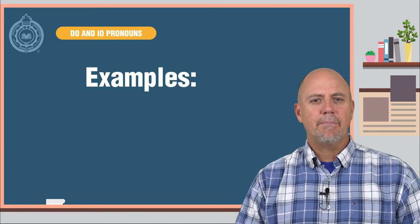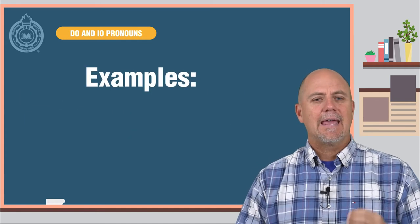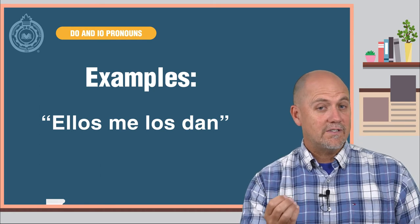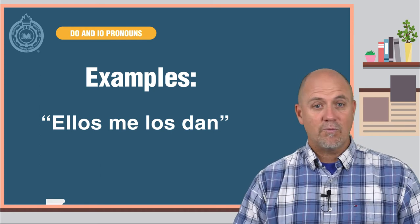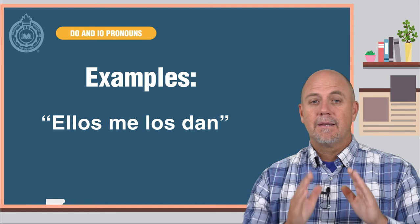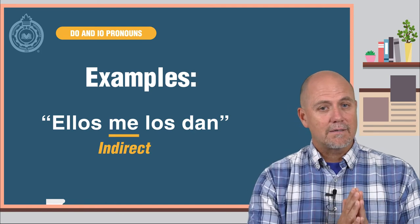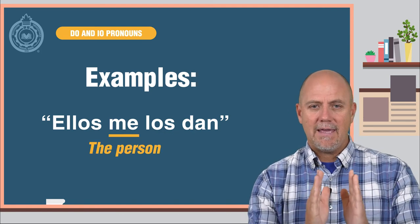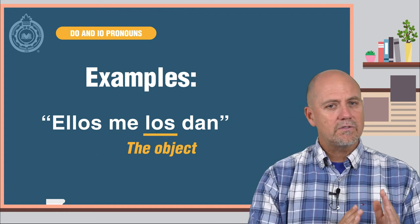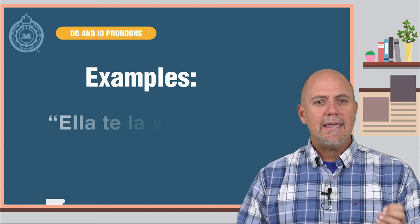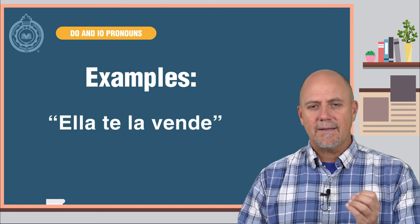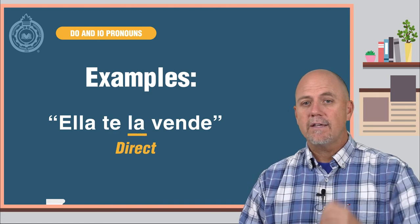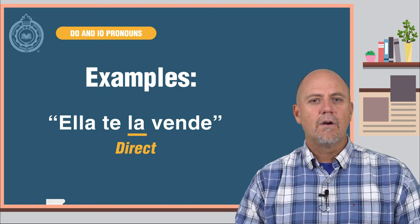Well, here are some examples. "Ellos me los dan." Do you know which is the direct and which is the indirect? Me is the indirect and los is the direct. Me is the person and los is the object. "Ella te la vende." Te is the indirect and la is the direct, or the thing.